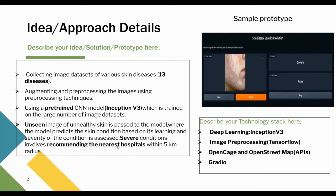If the case is severe, apart from just predicting the skin condition, we also try to predict the severity — whether it's a mild, medium, or severe case. If the person is suffering from a severe case of a particular skin condition, we try to recommend the nearest hospitals using the OpenCage and OpenStreetMap API.